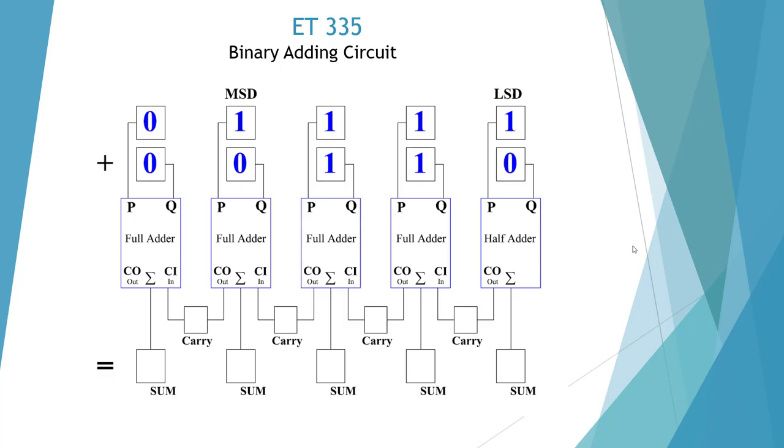Here I'm showing a binary adding circuit, which I call an adding machine, where we can demonstrate binary addition. The first thing we have is our least significant digit, or LSD. We have 1 plus 0, which is 1 carry 0. If I convert that to binary, it's going to be 1. We can look at these two digits as binary digits.